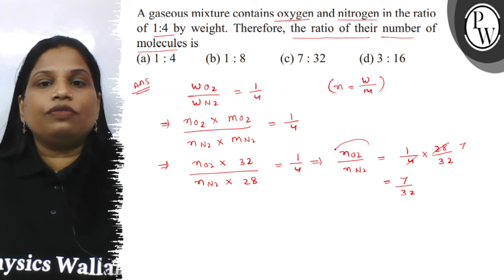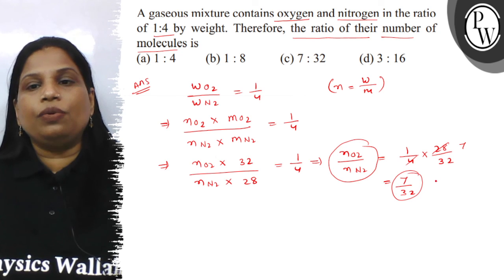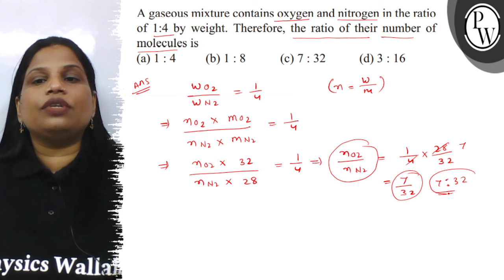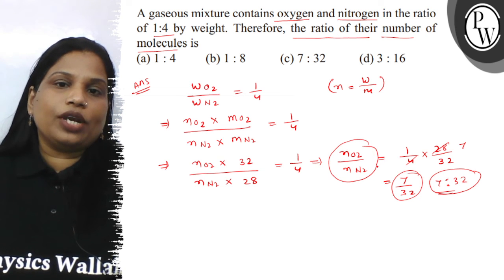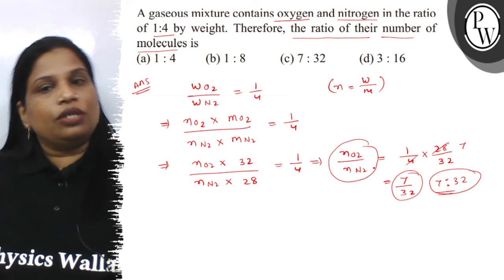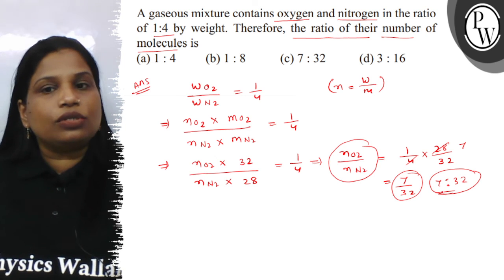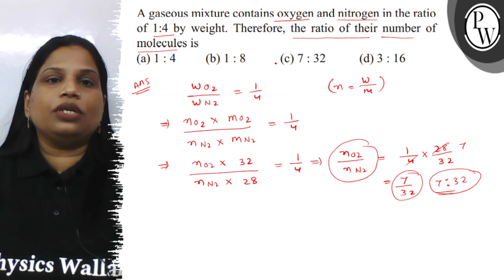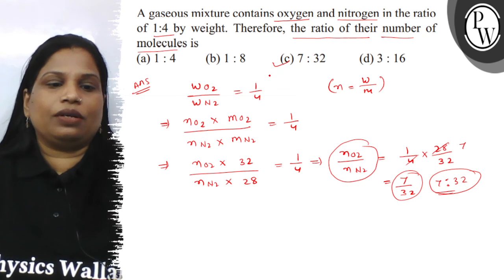So the ratio of their number of moles is 7 is to 32, and since each mole contains Avogadro's number of molecules, the ratio of number of molecules is also 7 is to 32. So your correct option is C. I hope you understood well. Best of luck. Thank you.